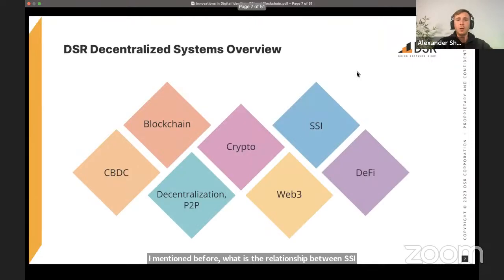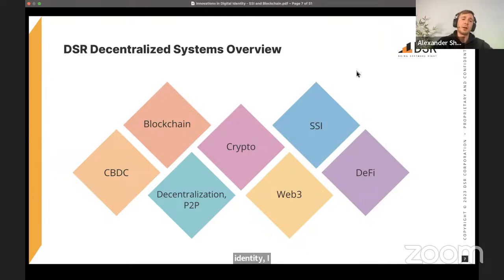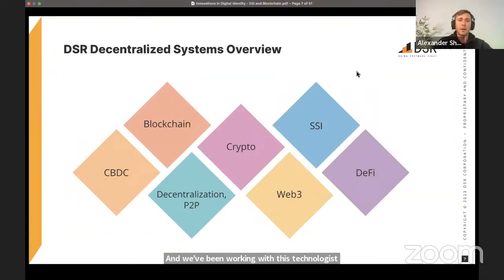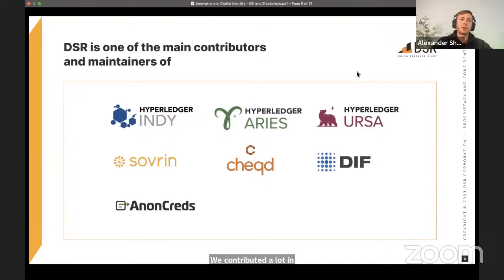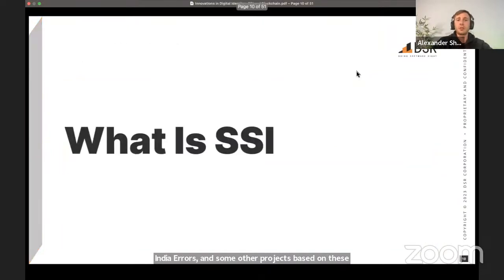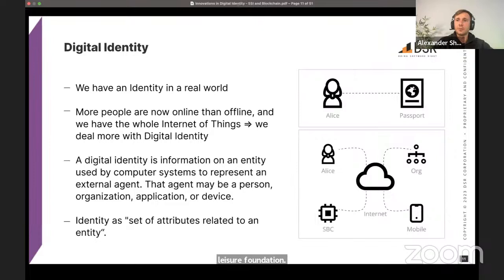I've been working with decentralized identity and blockchain technologies for more than seven years. During that time, I had the opportunity to work and contribute to important Hyperledger projects such as Hyperledger Indy and Aries. My main goal today is to share my experience and describe what self-sovereign or decentralized identity is, what the key technologies are, what the stack looks like, use cases, applications, frameworks, and the relationship between SSI and blockchain technologies.